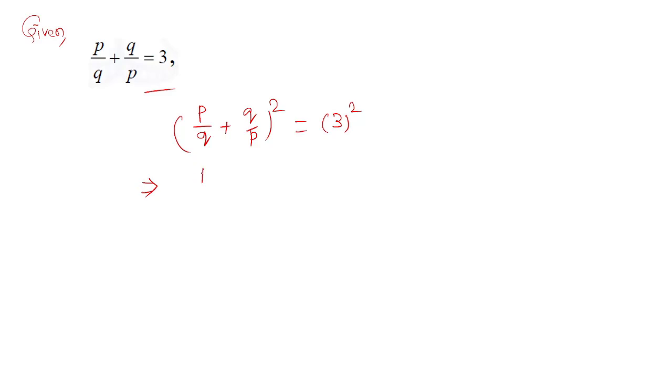It will be equal to (p/q)² + 2(p/q)(q/p) + (q/p)² = 9. Now p²/q² + 2 + q²/p² = 9. The p terms and q terms will be cancelled in the middle.